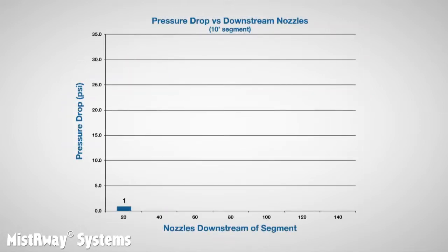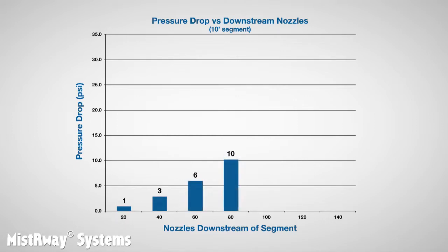Let's illustrate this with a chart. We took a 10-foot segment of tubing and measured the pressure loss when there were 20 nozzles worth of flow going through it — only about 1 psi. Then we added another 20 nozzles worth of flow, simulating 40 nozzles downstream: pressure loss increased to about 3 psi. So we doubled the flow but tripled the pressure drop. We added another 20 and then another 20. With 80 nozzles worth of flow, the pressure drop over the 10-foot segment was 10 psi — at 4 times the original flow, we're at 10 times the original pressure drop.